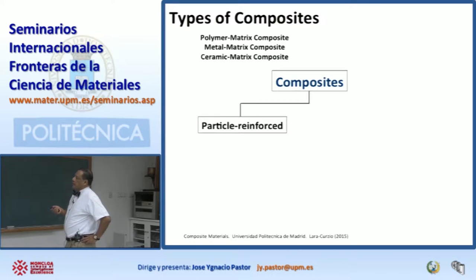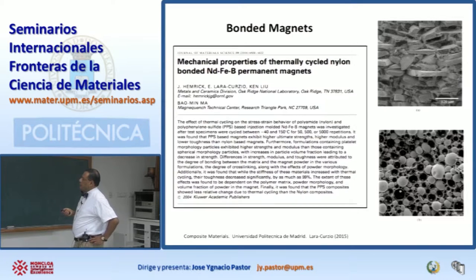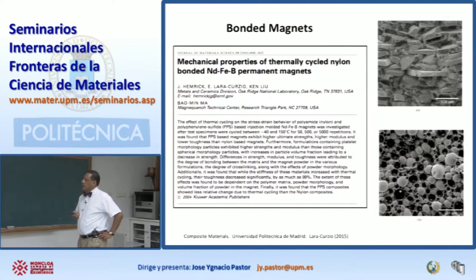So you're going to find different ways of classifying materials. One example of a particle reinforced composite is this — these are magnets. This is some work we did a few years ago where we were looking at the mechanical properties of magnets comprised of particles: magnetic particles of neodymium, iron, and boron compounds embedded in a polymeric matrix.